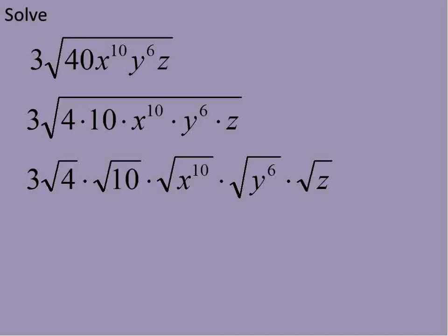Let's give each of these their own separate square root symbol and factor or take the square root of every single one that we can. The square root of 4 is 2. The square root of x to the power of 10 is x to the power of 5. Remember, we're just dividing that exponent by 2, and then we get rid of that square root symbol. Square root of y to the power of 6 is y to the power of 3, and the square root of z remains the same, square root of z.